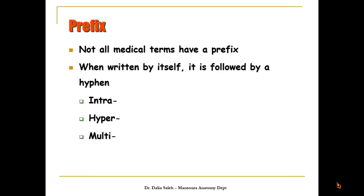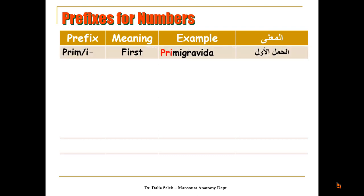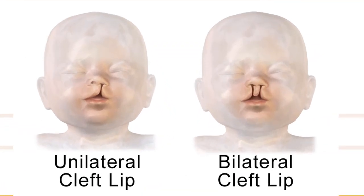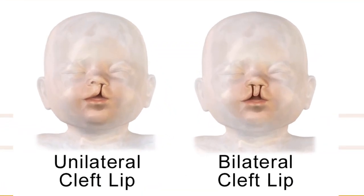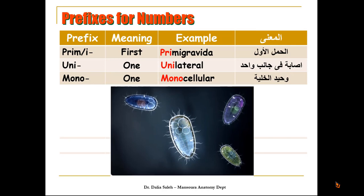Now let's move to some of the prefixes used in medical terminology, dividing them according to their use. Let's start with prefixes for numbers. 'Primi' means first, as in 'primigravida', which means the first pregnancy. 'Uni' means one — for example, 'unilateral' means affection of one side of the body. 'Mono' also means one, like 'monocellular', meaning one cell.